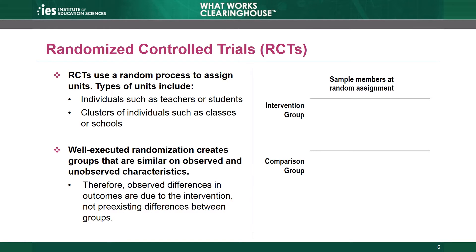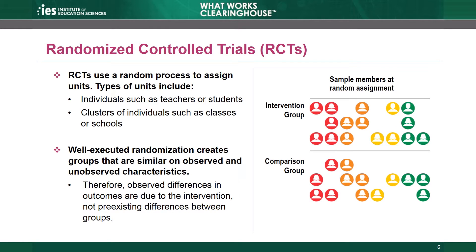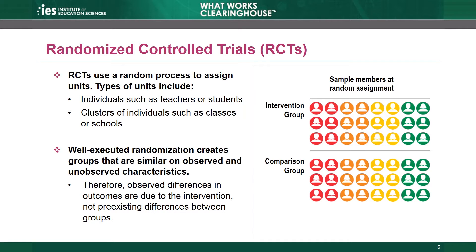Randomized control trials, or RCTs, are one of two designs that are eligible for review under the WWC group design standards. In an RCT, a study randomly assigns units to two or more groups. In a simple RCT, one group receives the intervention and the other serves as a comparison group. The units assigned might be individuals, such as teachers or students, or they might be clusters or groups, like classes or schools.